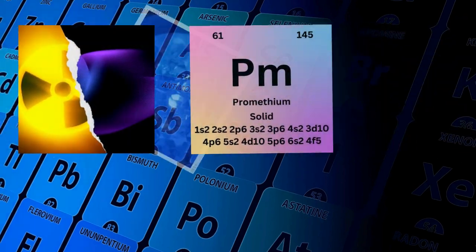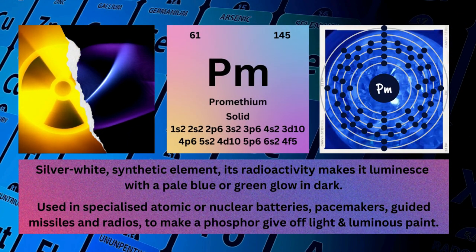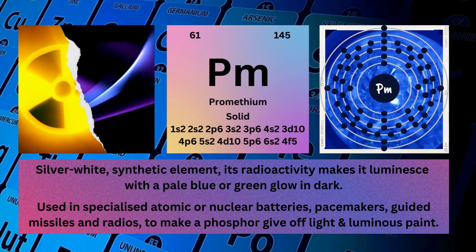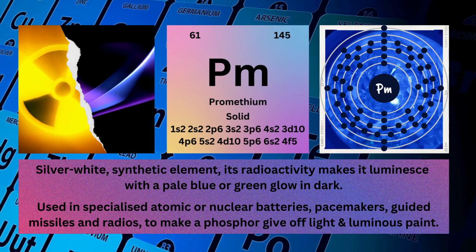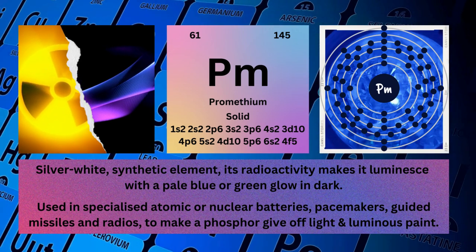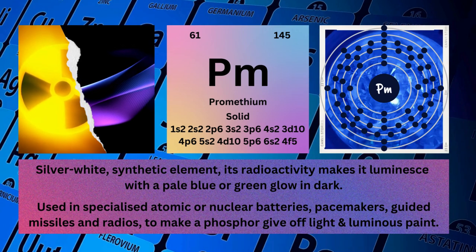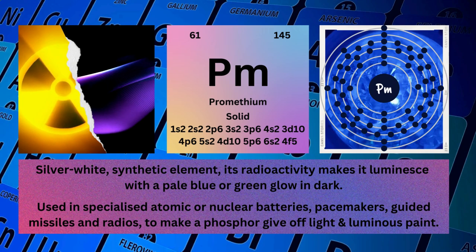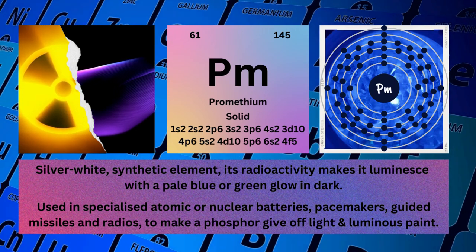Promethium. Atomic number: 61. Mass number: 145. Symbol: Pm. State: Solid.